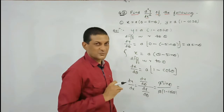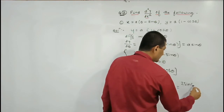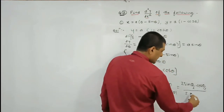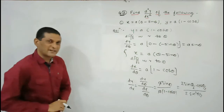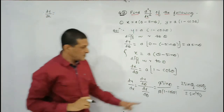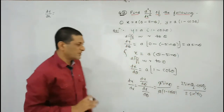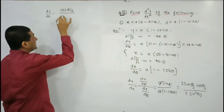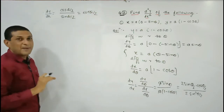Once these two values are known, we find dy/dx by applying the formula for differentiation of a parametric function: dy/dθ divided by dx/dθ. Substituting: numerator is a·sinθ and denominator is a(1 - cosθ), so a cancels. Applying the half-angle formula, sinθ = 2·sin(θ/2)·cos(θ/2) and 1 - cosθ = 2·sin²(θ/2). After cancellation, dy/dx = cot(θ/2).